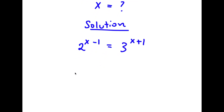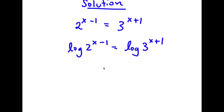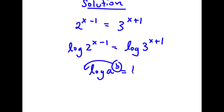Now I'm actually going to take the log on both sides. So now I have log of 2 to the power of x minus 1 is equal to log of 3 to the power of x plus 1. If I have something in the form log a to the power of b, I can move this exponent b to the front, so this becomes b times log a.